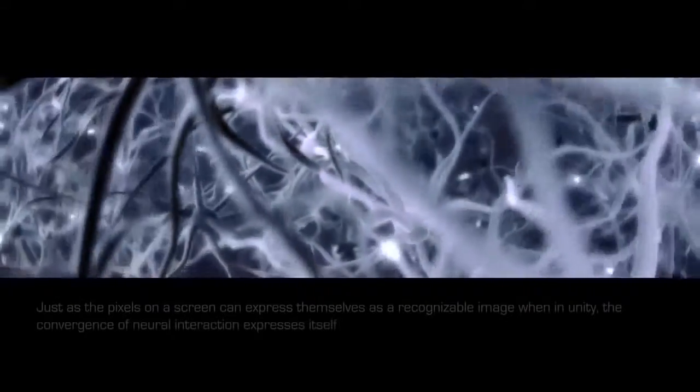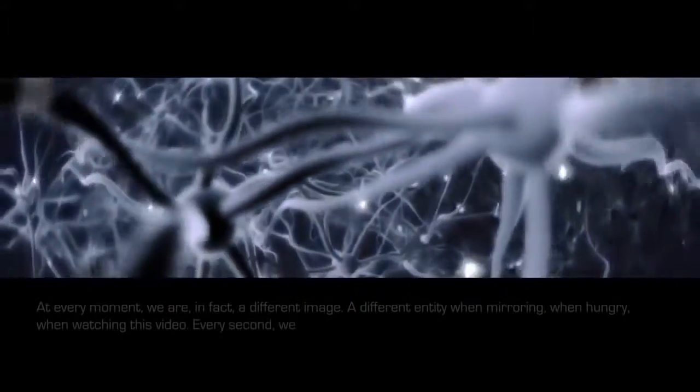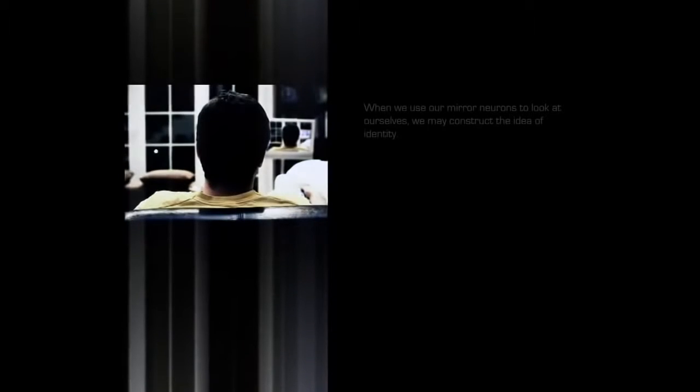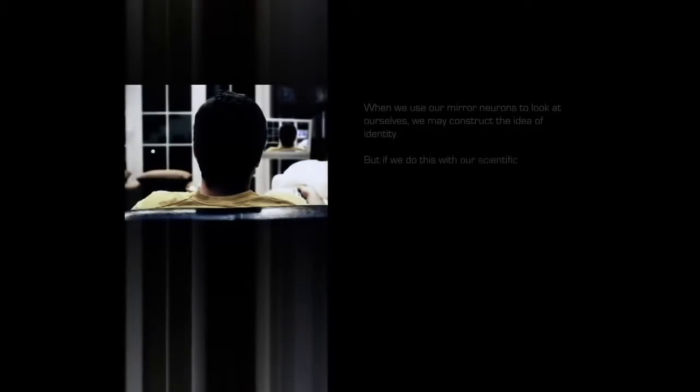Just as the pixels on a screen can express themselves as a recognizable image when in unity, the convergence of neural interaction expresses itself as consciousness. At every moment we are in fact a different image, a different entity when mirroring, when hungry, when watching this video. Every second we become different persons as we go through different states. When we use our mirror neurons to look at ourselves, we may construct the idea of identity, but if we do this with our scientific understandings, we see something completely different.